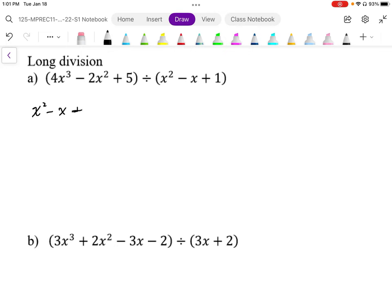In this example we have 4x³ - 2x² + 5. We've got to make sure we have a placeholder for the x term, so we put a zero in there. That's important for not just long division but also synthetic division. When we do this division, we're going to multiply by 4x.